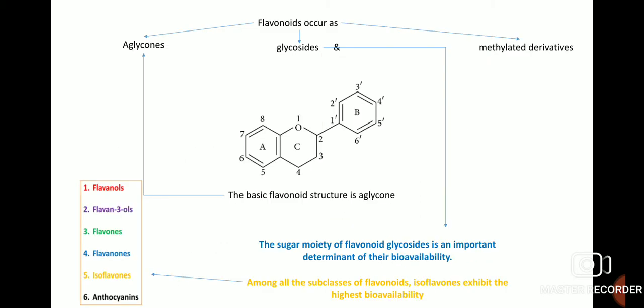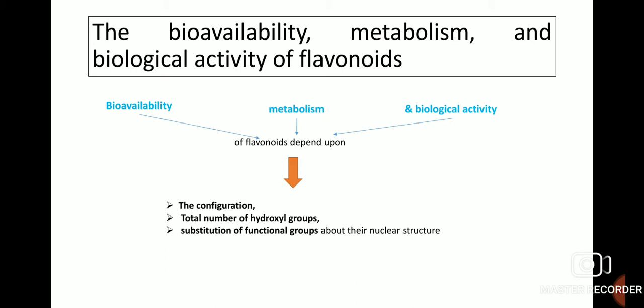Flavonoids occur as aglycones, glycosides and methylated derivatives. Glycosides contain the sugar moiety of the flavonoid and are responsible for their bioavailability. The basic flavonoid structure is mainly the aglycone in the C6-C3-C6 structure. Among all subclasses of flavonoids, isoflavones exhibit the highest bioavailability. The bioavailability, metabolism and biological activity of flavonoids depend on the configuration, total number of hydroxyl groups and substitution of functional groups about their nuclear structure.